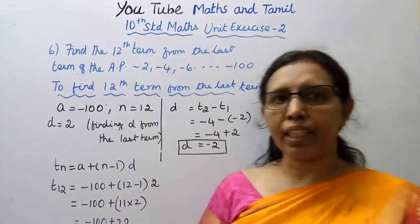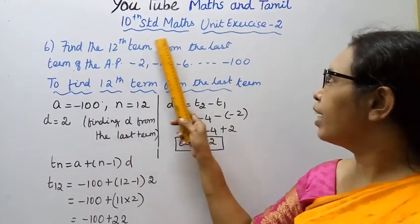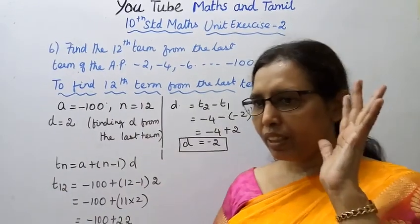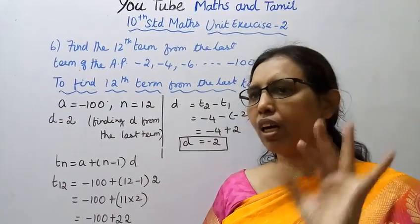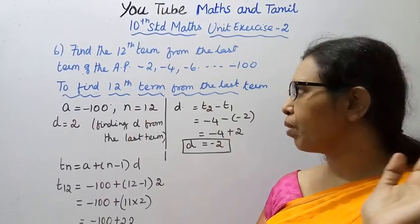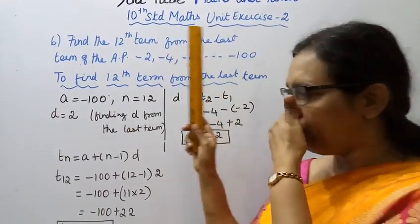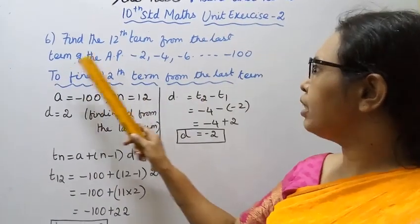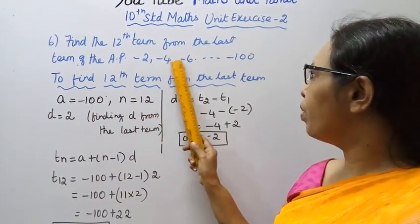Hello students, welcome to Maths and Tamil channel. This is 10th standard maths unit exercise 2. In this chapter's full exercise, we'll work through some problems. You can find the playlist in the unit exercise section. Question 6: Find the 12th term from the last term of the AP -2, -4, -6, ..., -100.